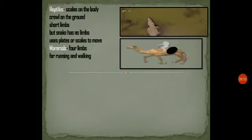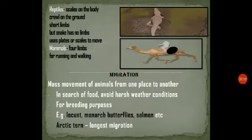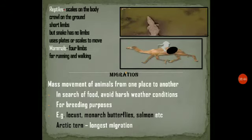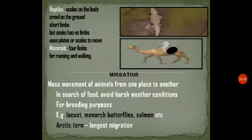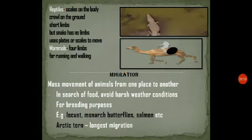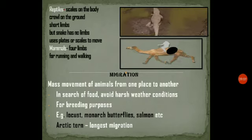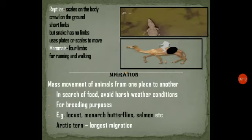Next comes migration. Migration is the mass movement of animals from one place to another. Animals migrate in order to search for food, to avoid harsh weather conditions, and for breeding purposes. They move in very large groups every year and come back after summer. Examples include locusts, monarch butterflies, etc. The Arctic tern is known for the longest migration.